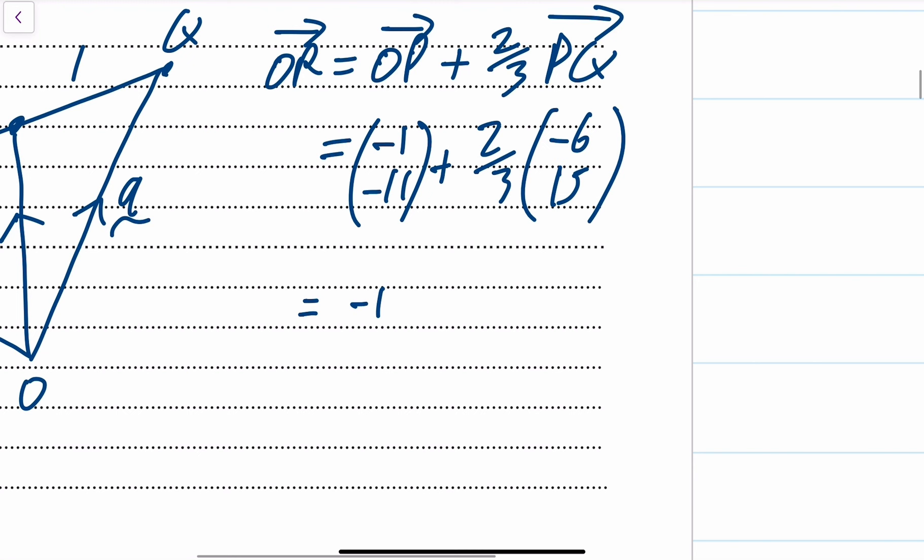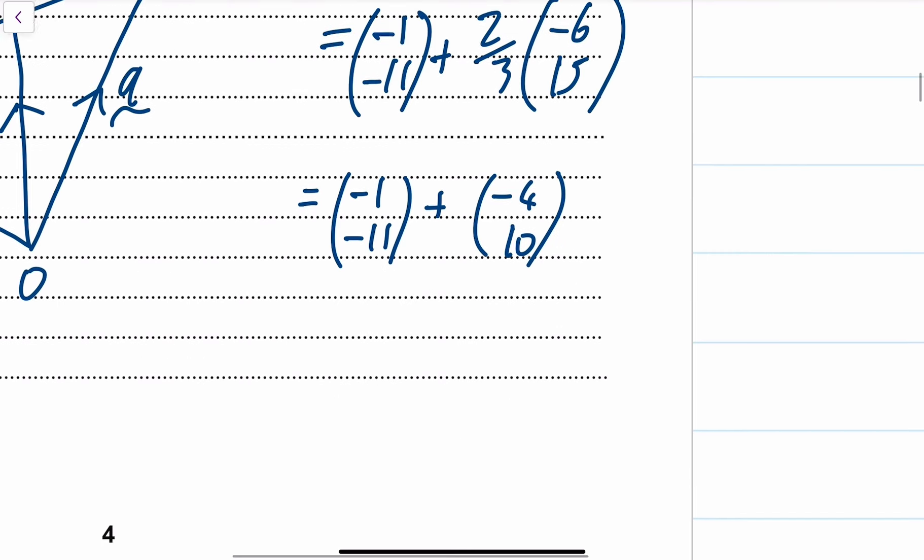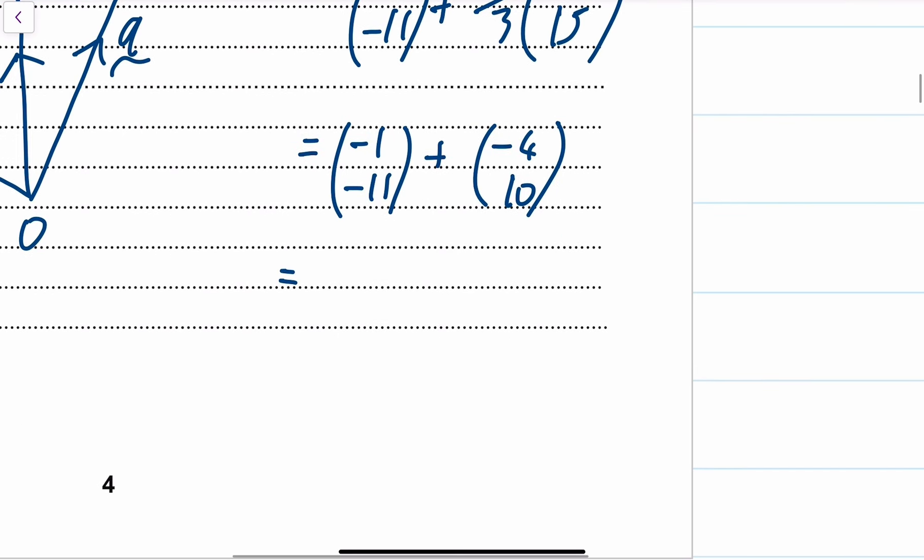That is minus 1 minus 11 plus two thirds of minus 6 would be minus 4, and two thirds of 15 would be 10. We can piece that together. That's going to be minus 1 minus 4 is minus 5, and minus 11 plus 10 is minus 1.